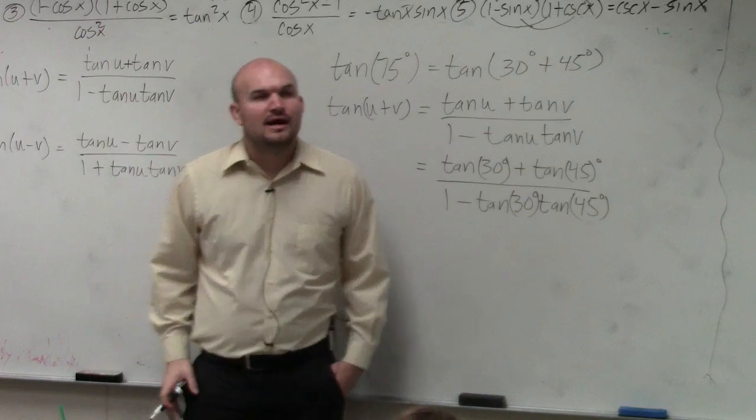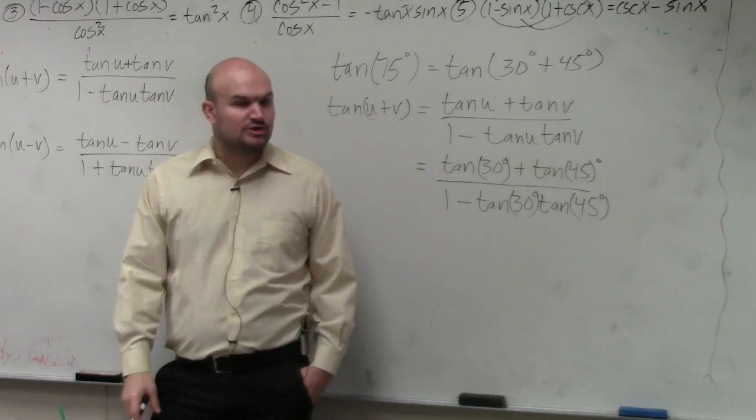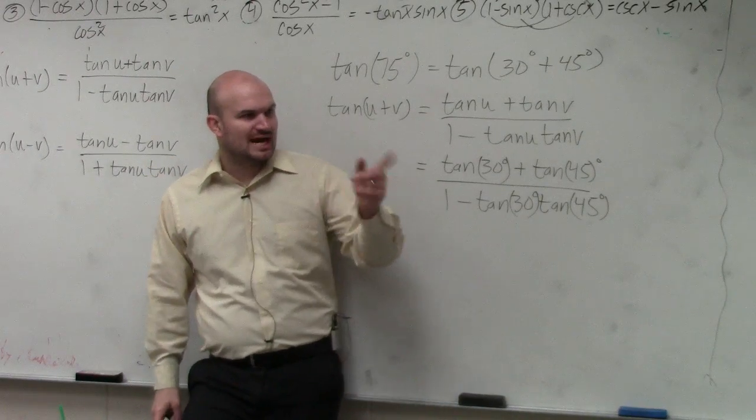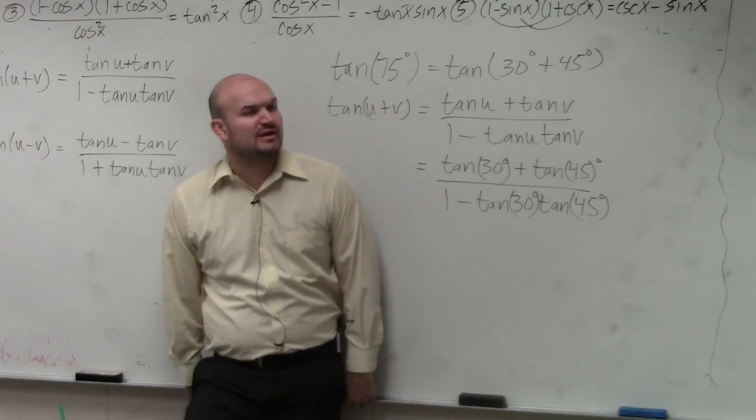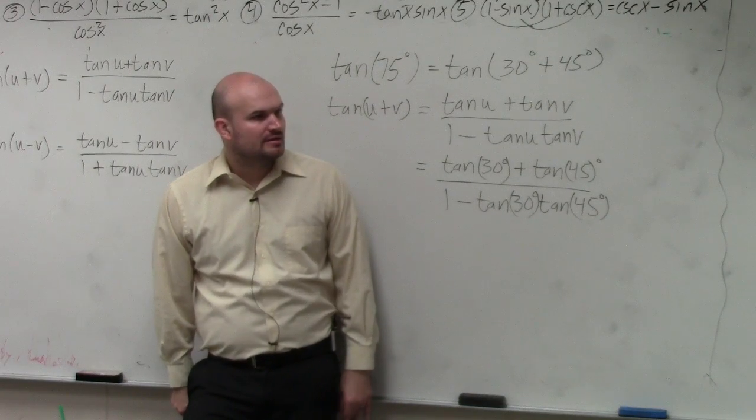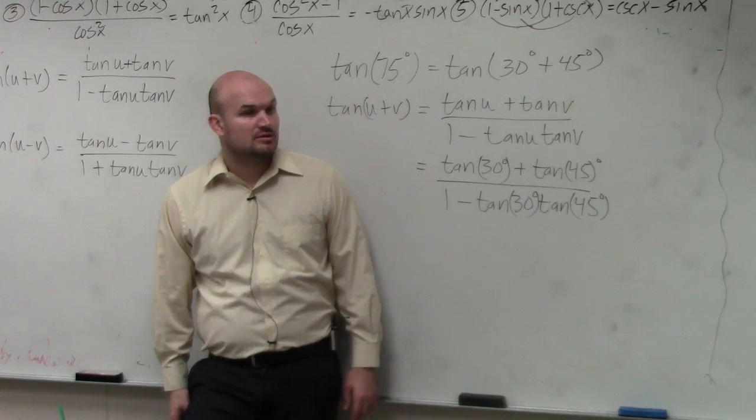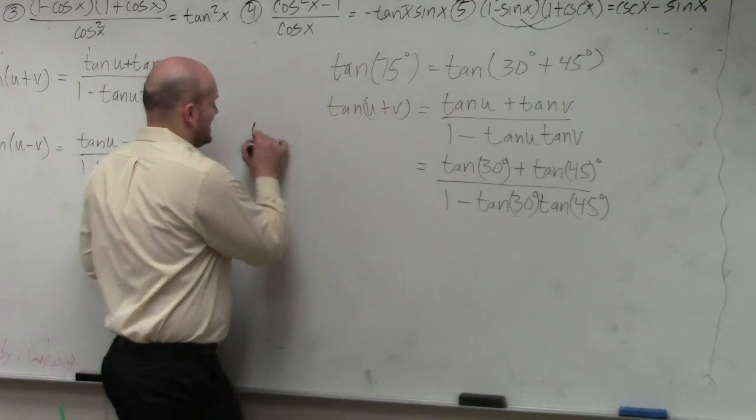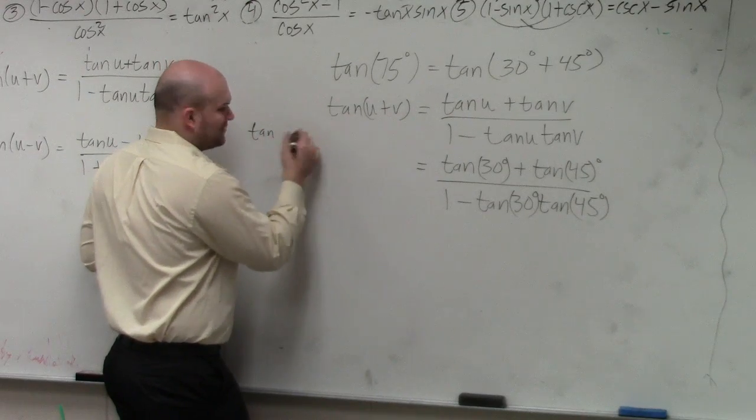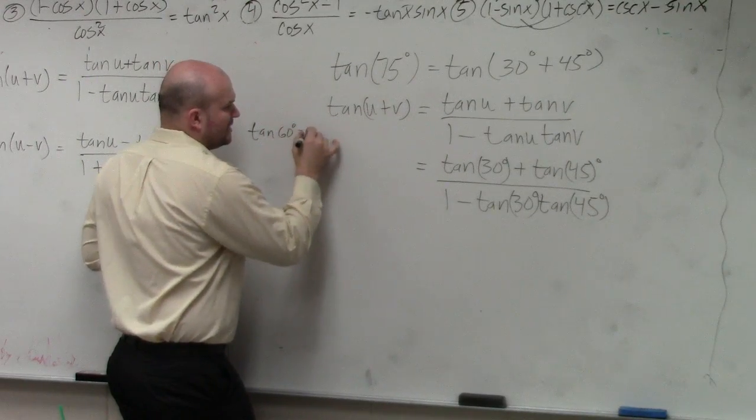OK. Now the reason why we did our worksheet is, Josh, you had pi over 3, right? Remember tangent of pi over 3, the one you corrected me on? That simplified to what? Square root of 3. So we know that the tangent of pi over 3 is 60 degrees, right? Is square root of 3.